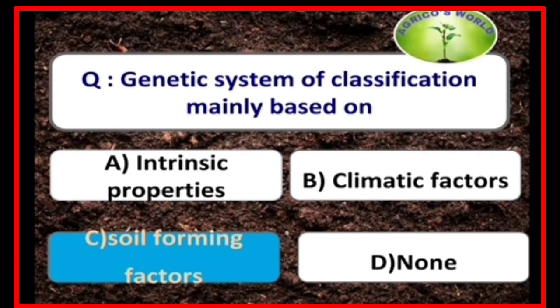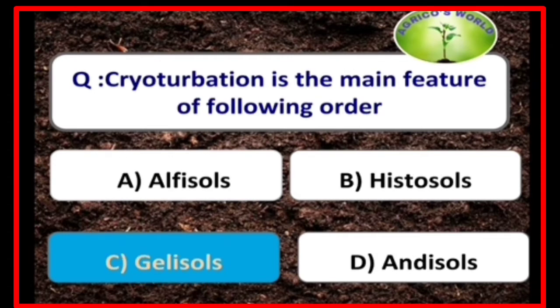Genetic system of classification is mainly based on soil forming factors. Cryoturbation is the main feature in the order Gelisols.